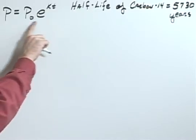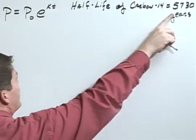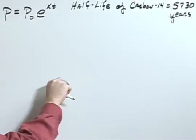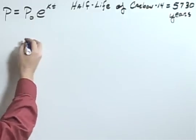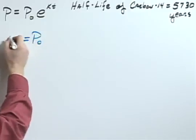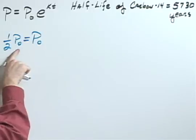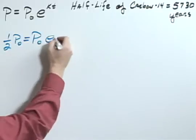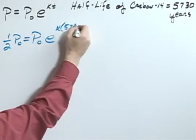To solve this I'm going to use the exponential growth equation and the fact that the half-life of carbon is 5,730 years. That means that in 5,730 years, the amount of carbon that I start with, P sub zero, will be half of that amount. So one half P sub zero equals P sub zero E to the K times 5,730.